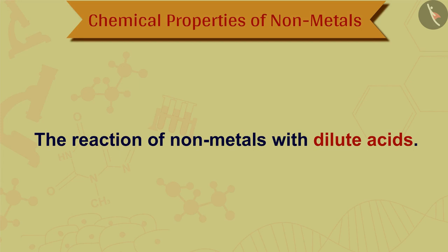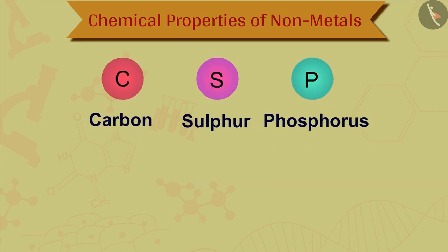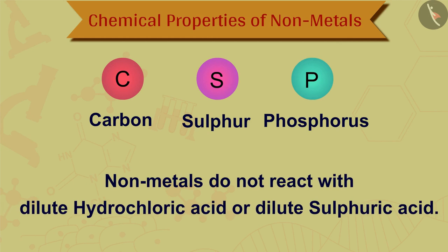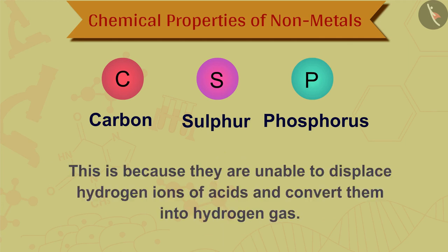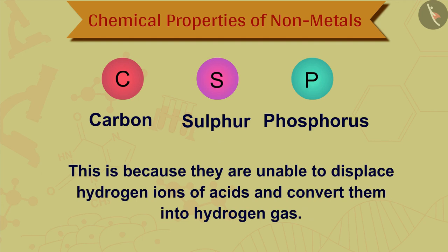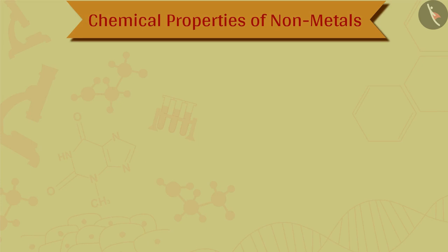The next property is the reaction of nonmetals with dilute acids. Nonmetals do not react with dilute acids. For example, carbon, sulfur, and phosphorus do not react with dilute hydrochloric acid or dilute sulfuric acid. This is because nonmetals are unable to displace hydrogen ions of acids. A nonmetal is itself an electron acceptor, and therefore it cannot give electrons to hydrogen ions to reduce them to hydrogen gas.